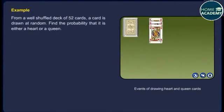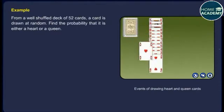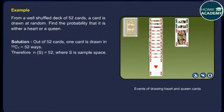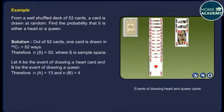From a well-shuffled deck of 52 cards, a card is drawn at random. Find the probability that it is either a heart or a queen. Solution. Out of 52 cards, one card is drawn in 52C1 = 52 ways. Therefore N(S) = 52. Let A be the event of drawing a heart card and B be the event of drawing a queen. Therefore N(A) = 13 and N(B) = 4.